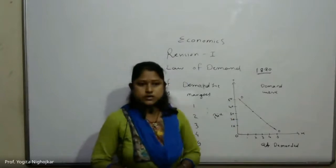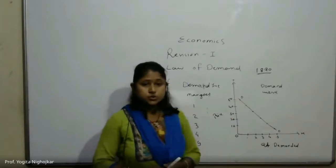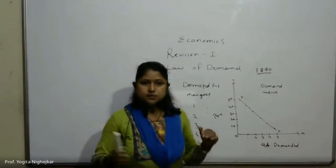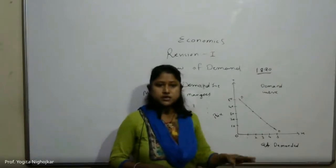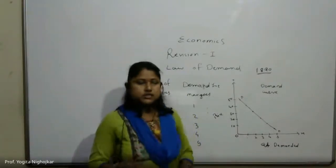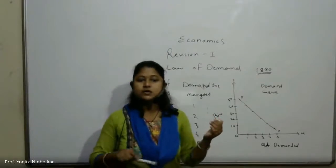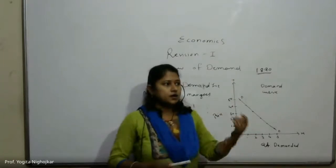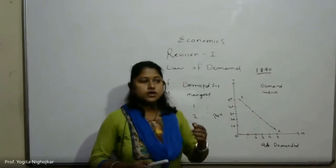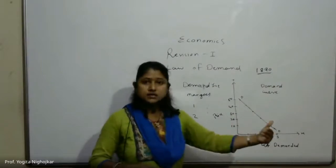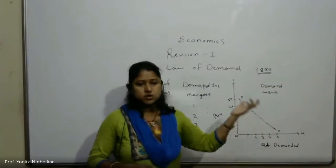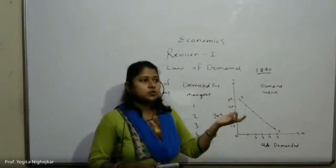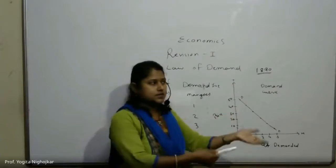Next exception is ignorance. Sometimes due to ignorance, people buy more of a commodity at a high price because they do not have proper market knowledge regarding price changes. This may happen when the consumer is ignorant about the price of that commodity at other places — for example, students will use the xerox shop nearest to college without knowing if cheaper options exist elsewhere.